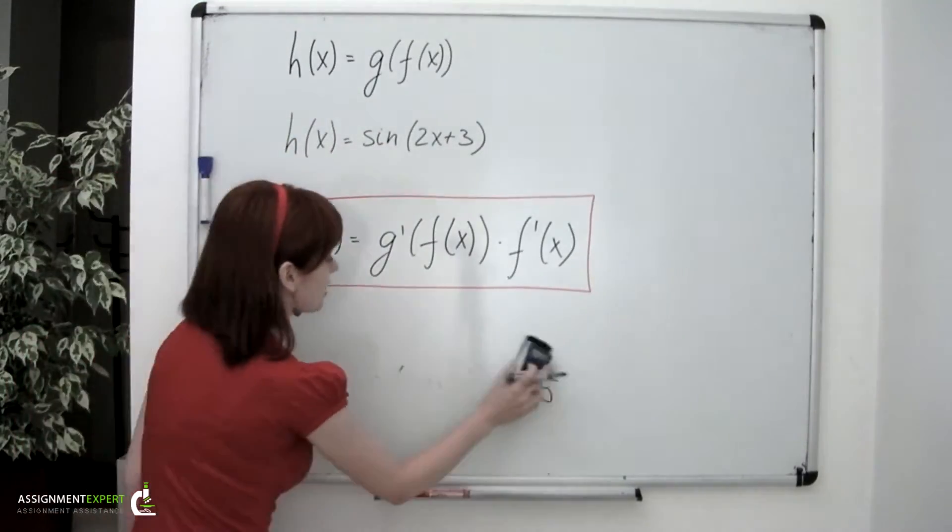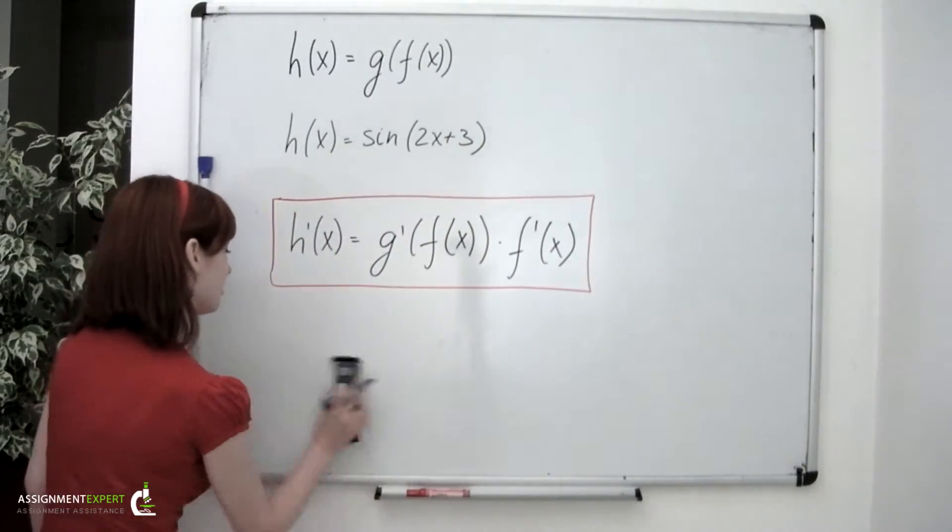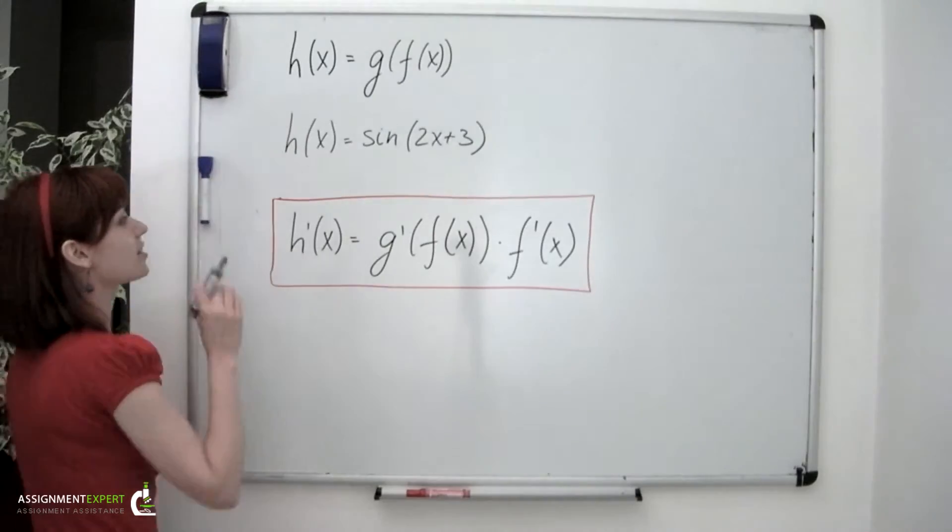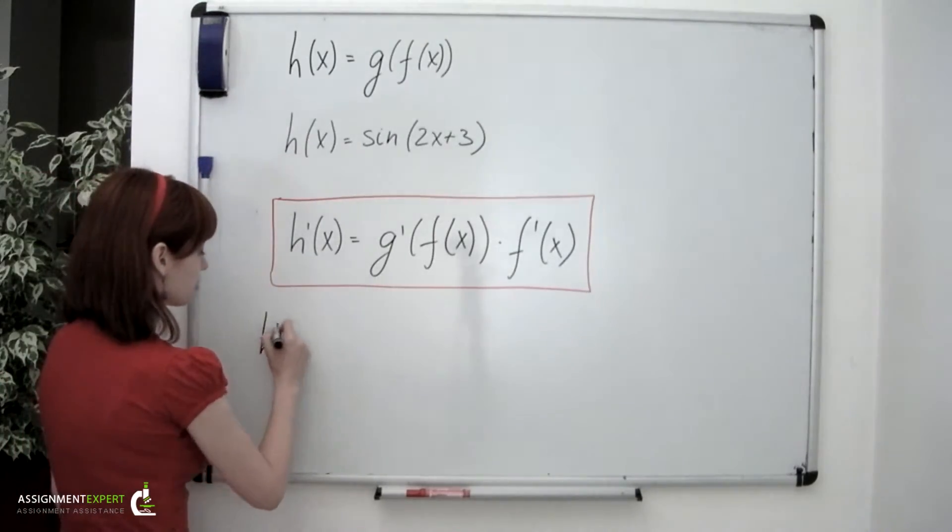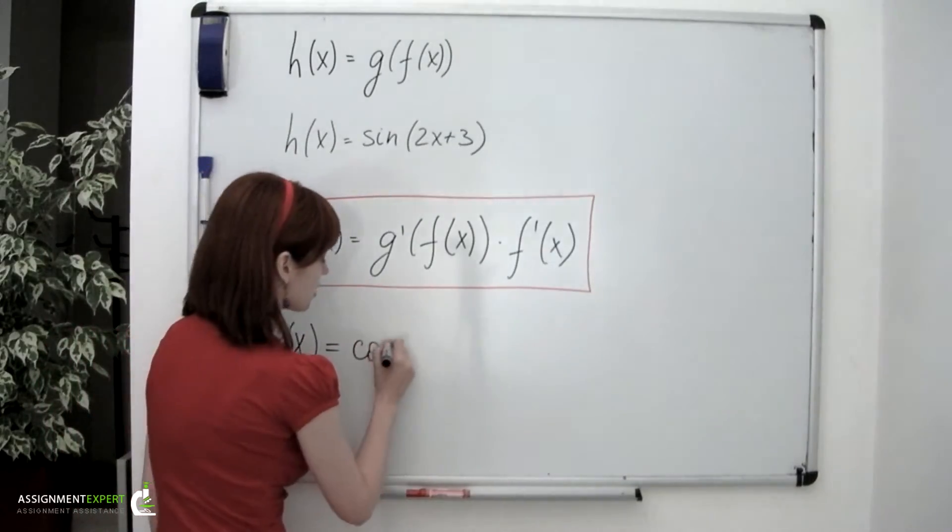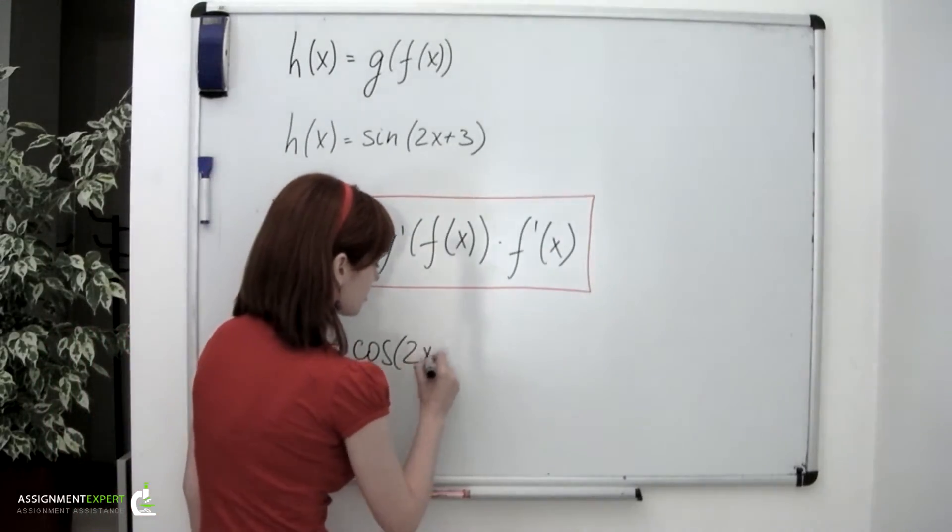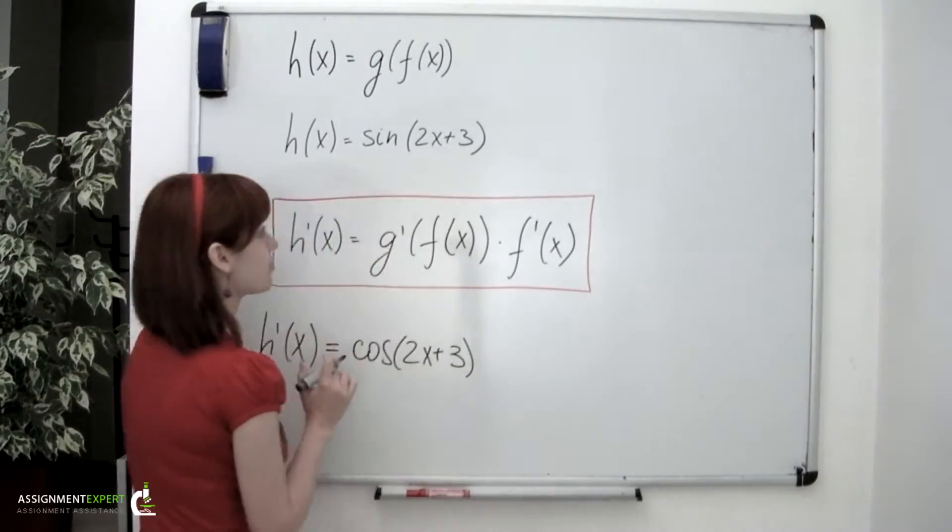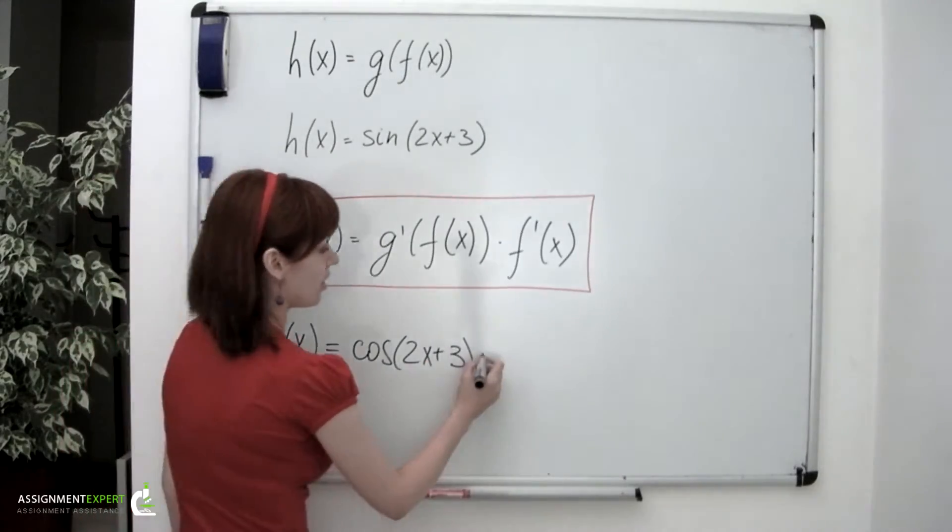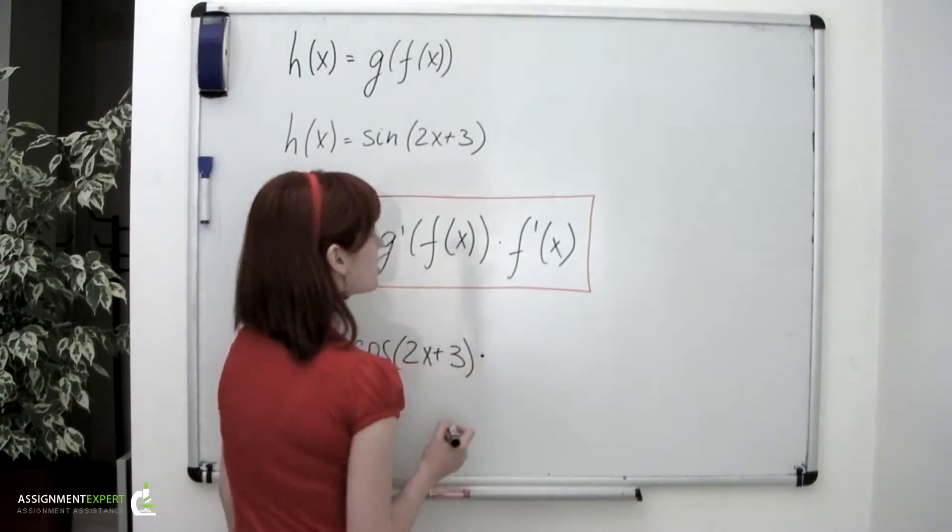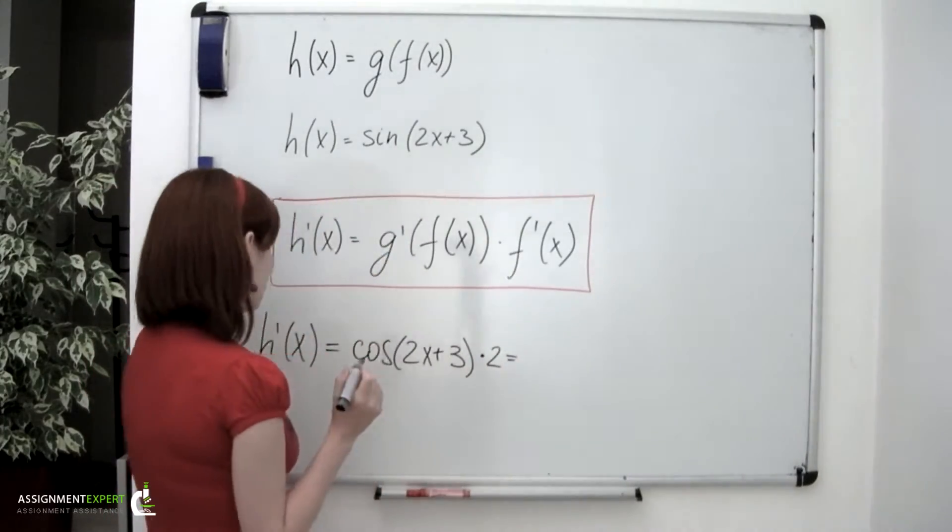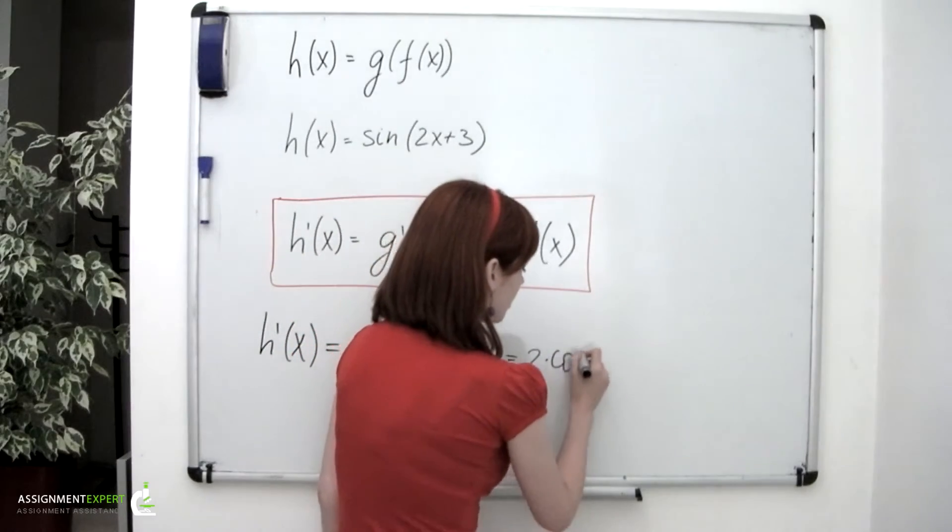So this polynomial I have in the brackets is the inside function and sin is the outside function. Now as we have that clear, we can use chain rule to find its derivative. So according to the formula, h prime equals cos of 2x plus 3. So I take derivative of the outside function and evaluate it at the inside function. And then I multiply it by derivative of the inside function, which is simply 2. So the answer to that would be 2 times cos of 2x plus 3.